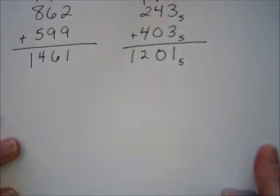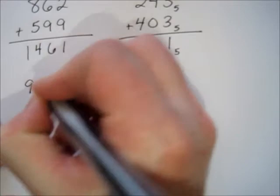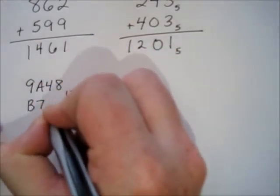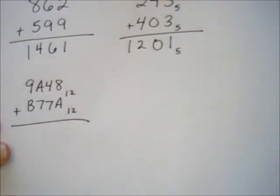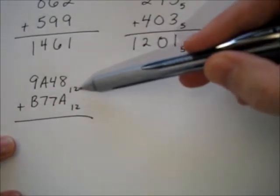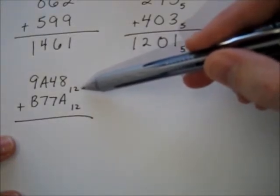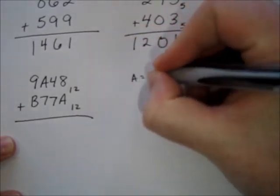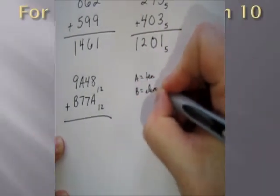Let's proceed to the next one. 9A48 base 12 plus B77A. I'm going to add those together. So this is one where we've got letters introduced here. Because this is base 12, we need 12 numerals. So we have the standard numerals 0 through 9, but then you need a separate numeral for 10, which is going to be the letter A. And we need a numeral for 11, which is going to be the letter B.